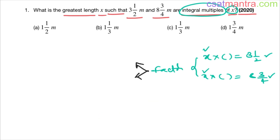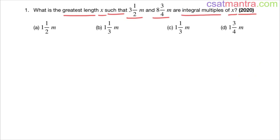We will solve this problem in two ways: one is the conventional method — finding out the HCF — and the second is making use of the options. Sometimes by using options, two options may give the same answer, or it would be time-consuming. So it is very important for you to know the conventional method for every problem.